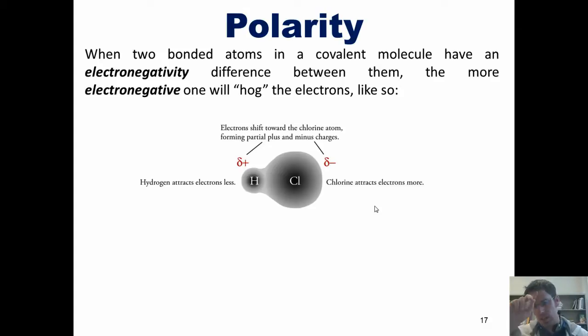However, because the chlorine is much more electronegative than the hydrogen, it hogs the electrons more to itself, creating a partial negative charge on the chlorine atom and a partial positive charge on the hydrogen atom.